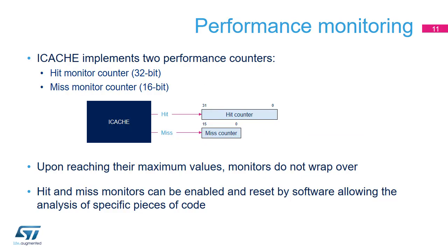The hit monitor counts the AHB transactions at the input of the iCache execution port that do not generate a transaction on iCache output master 1 or master 2 port. It also takes into account the hit-and-miss events. The miss monitor counts the AHB transactions at the input of the iCache execution port that generate a transaction on iCache output master 1 or master 2 port. It also takes into account all accesses whose address is not present in either the tag memory or the refill buffer. These counters do not wrap over when they reach their maximum value, and they can be dynamically enabled and disabled by software, which is useful for analyzing specific pieces of code.